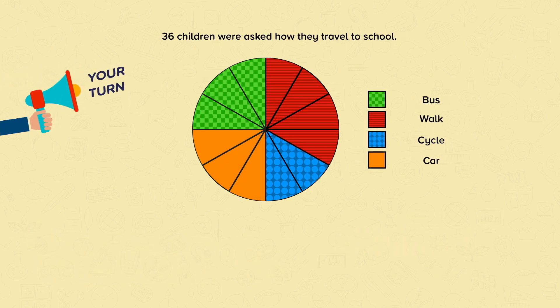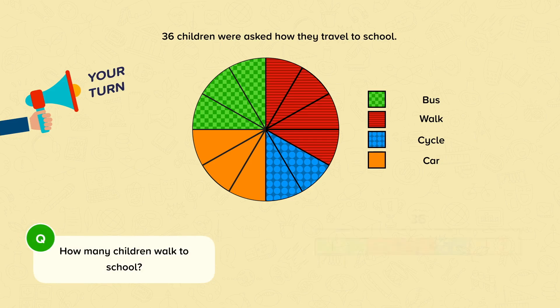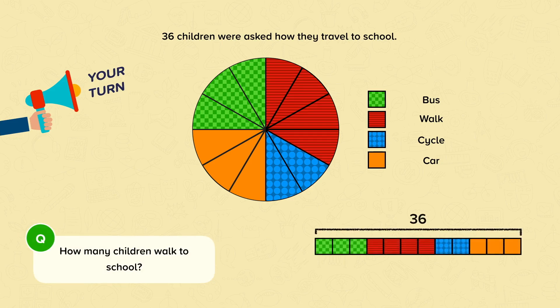Now it's your turn. Use this pie chart to calculate how many children walked to school. Pause the video and have a go. You should have identified that the pie chart represents thirty-six children in total with twelve segments. Dividing thirty-six by twelve gives three per segment. The number of children that walked is represented by four red segments, so three multiplied by four equals twelve. The pie chart shows that twelve children walked to school.